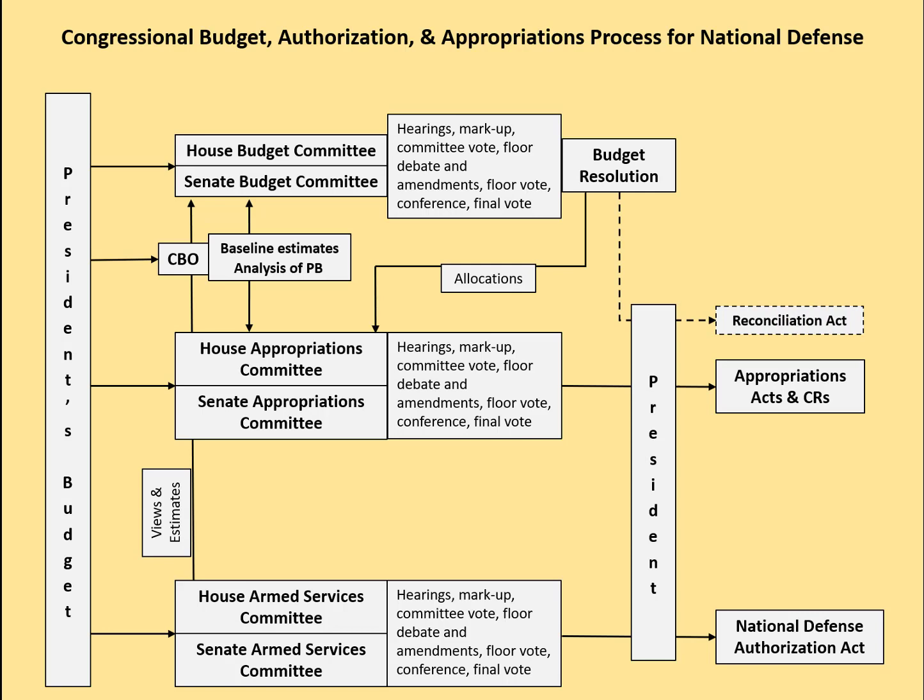Sometimes — and this is why it's a dotted line — the budget resolution calls for reconciliation. Reconciliation directs certain committees in Congress to change spending or revenue by particular amounts, and is often the mechanism for changing tax rules or entitlement programs. Each committee writes a bill to achieve that target, and they all get consolidated by the budget committee into one big bill. This is a special piece of legislation: it cannot be filibustered, it needs only a simple majority to pass, and then it goes to the president and changes typically permanent law like tax law or entitlement law.